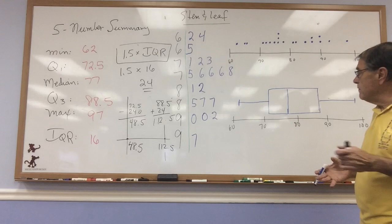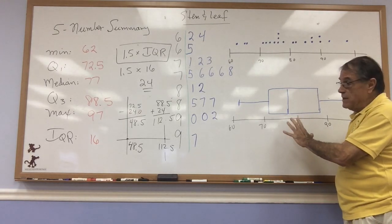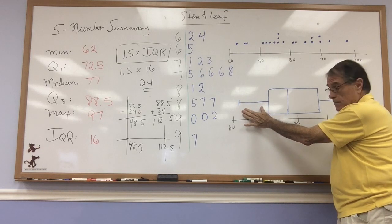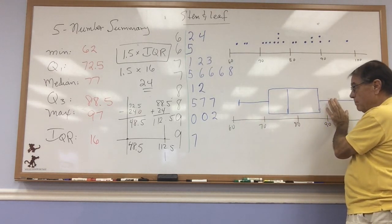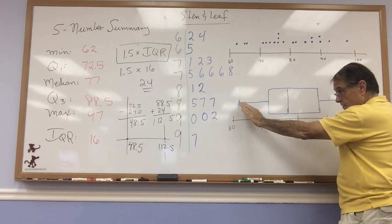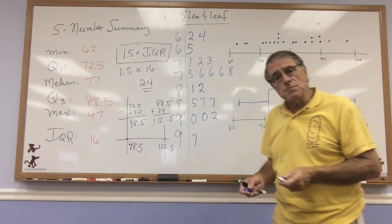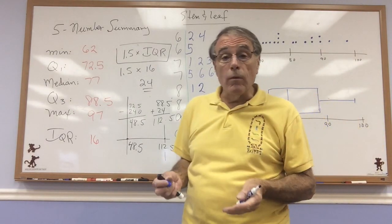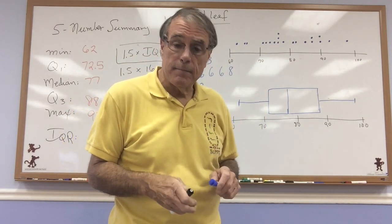And the box plot gives us a quick visual of our data in 25% pieces. Here's the bottom quarter, here's the middle 50%, here's the upper quarter. Here's the bottom half, here's the upper half. Here's the bottom 75%, there's the upper 75%. So the box plot gives us a very quick and easy way to graphically represent the data.